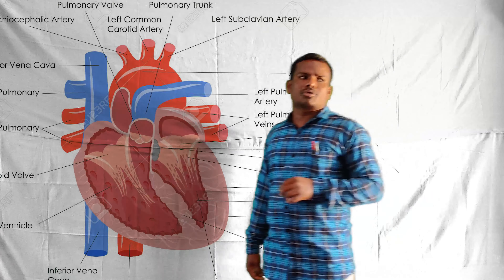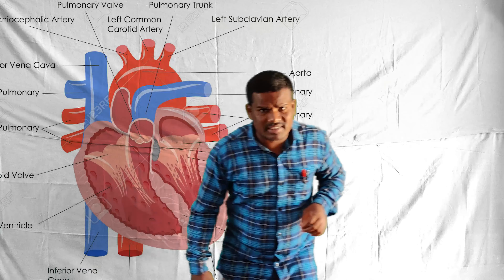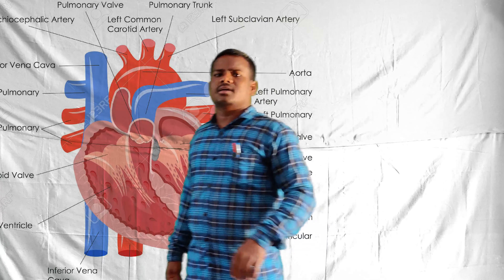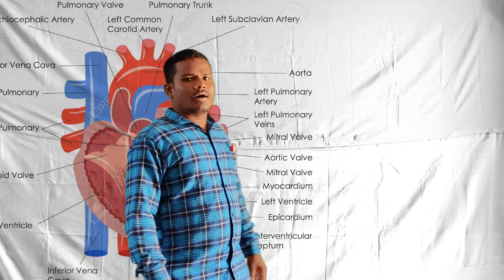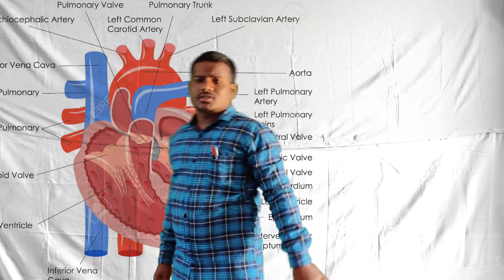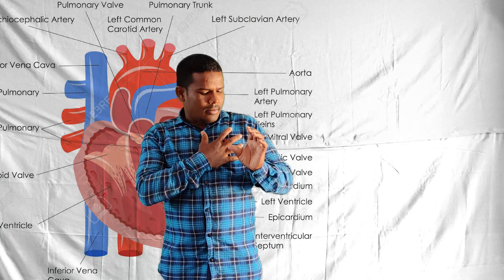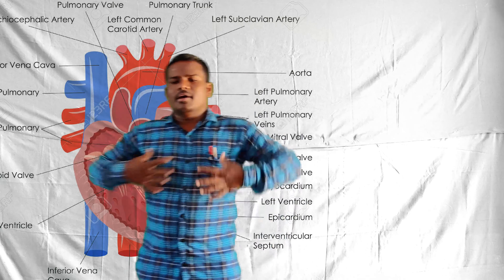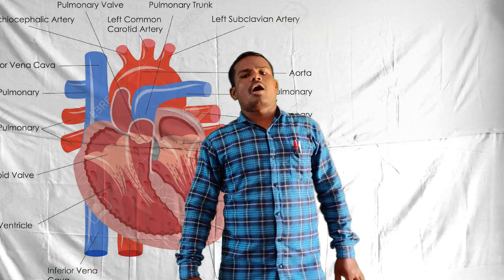Now we are going to discuss the human heart. The human heart is called the pumping station, because through it only the blood is supplied to every cell of our body. The human heart is located between a pair of lungs, at the left side of the chest cavity, and is protected by the ribcage. These are the external features of the human heart.